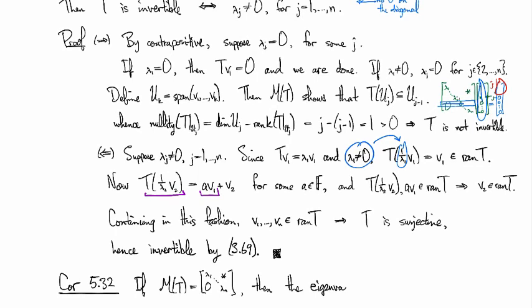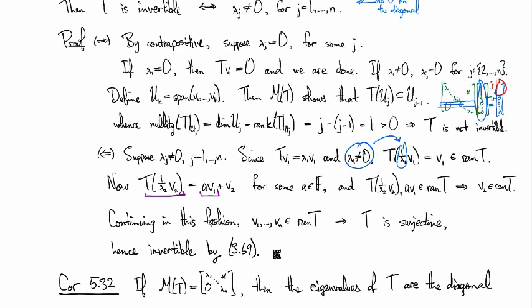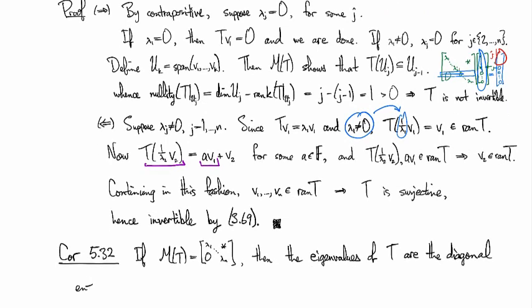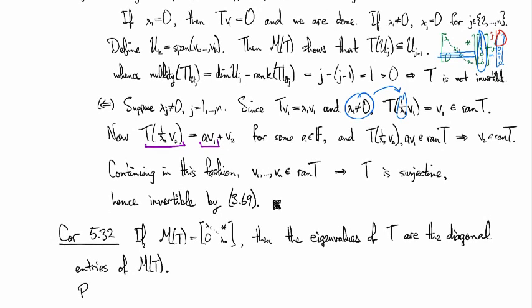If the matrix of T is upper diagonal again, then the eigenvalues of T are the diagonal entries of the matrix.